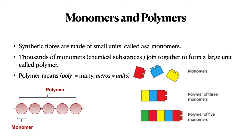Just like a multicellular organism like humans is made up of cells — where the cell acts as a building block — in the case of polymers, monomers do the same thing. When a large number of monomers join together, they form a large unit called a polymer. Thousands of monomers join to form one single unit called a polymer. The word 'polymer' comes from 'poly' meaning many and 'meros' meaning units.